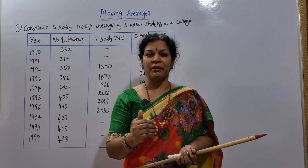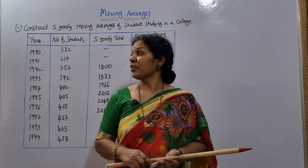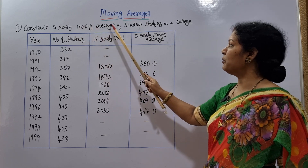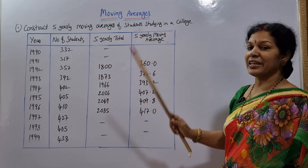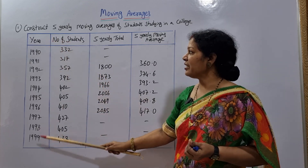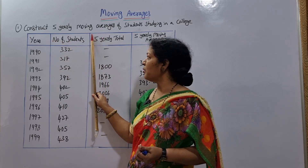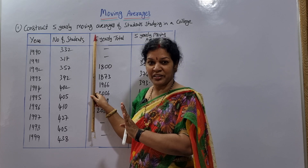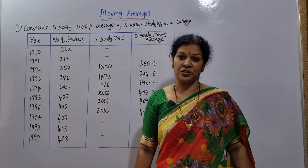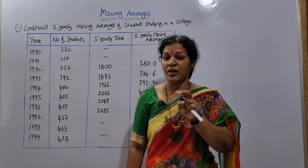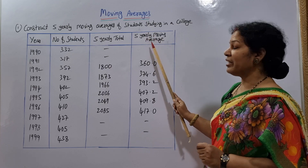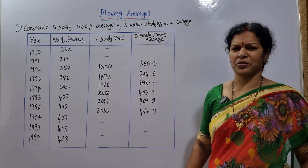Here is a problem: construct five-yearly moving averages of students studying in a college. They are asking for a five-yearly moving average. The data given is year and number of students only. For this we need two columns: first, five-yearly total, and second, five-yearly moving average — only these two columns.